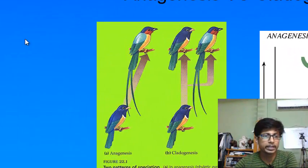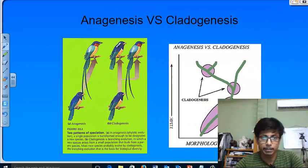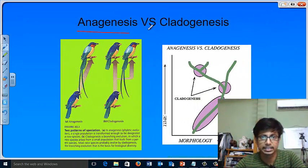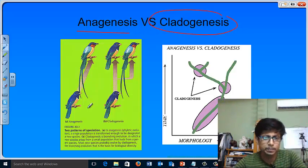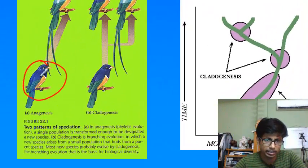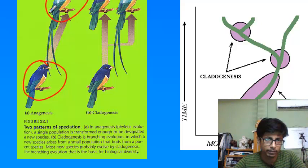For better understanding, if I take the example of two things, one is called anagenesis and cladogenesis. These are two terms you should know. Anagenesis means simply one ancestor from the ancestor and offspring develops. The species are kind of the same, the genetic content is very similar.